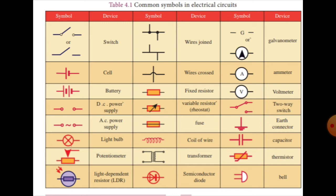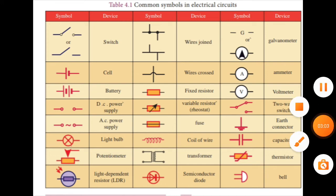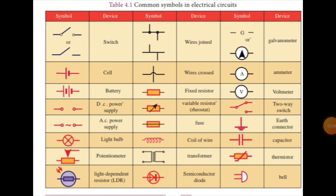We can connect cells to increase the battery voltage. DC power supply and AC power supply use a sinusoidal symbol. Other components include the light bulb and potentiometer. The potentiometer has a variable resistance symbol. Light dependent resistor, LDR, is also shown. Wires can be joined or crossed. A fixed resistor and a variable resistor with an arrow symbol are also used.